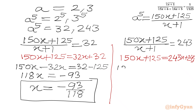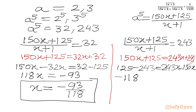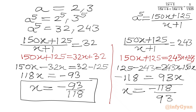For a equals 3: a⁵ equals 243. So (150x+125)/(x+1) equals 243. Cross-multiplying: 125 minus 243 gives minus 118 on the RHS, and 243x minus 150x gives 93x on the left. So x equals minus 118 over 93. Here we have our two real solutions: x equals minus 93 over 118, and x equals minus 118 over 93.